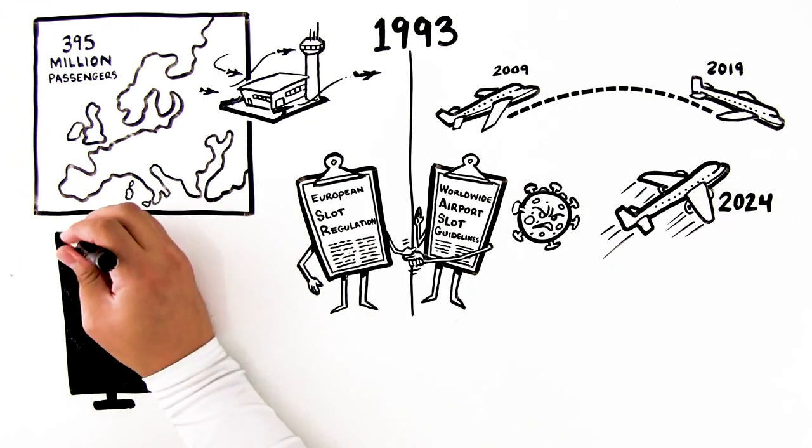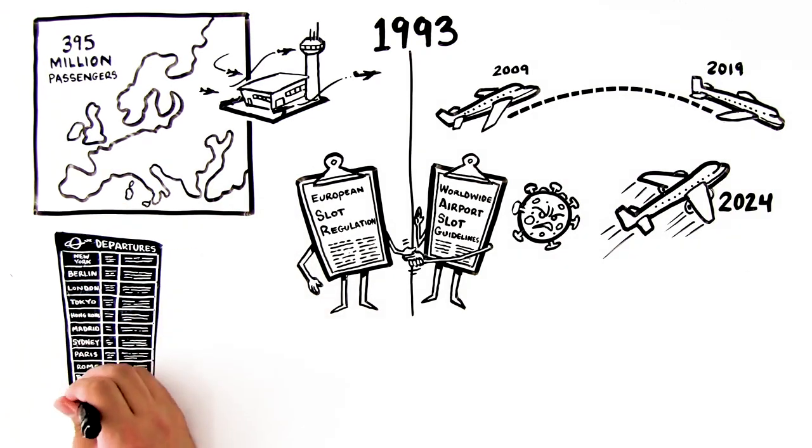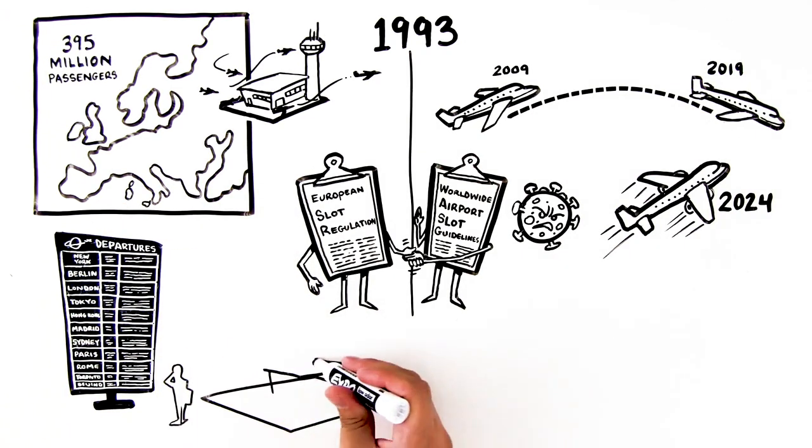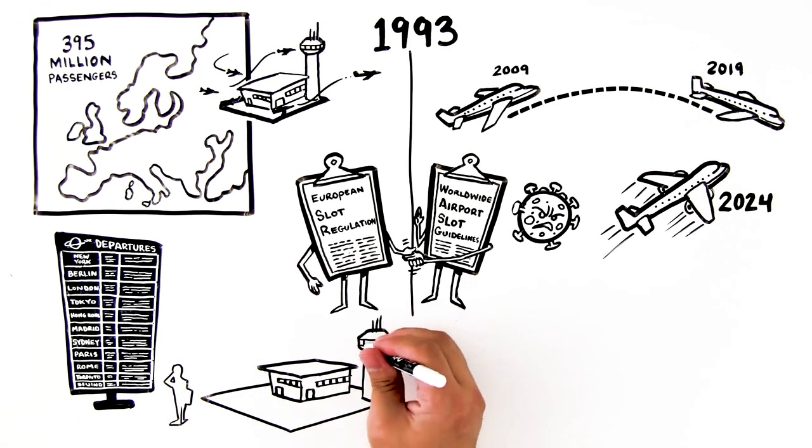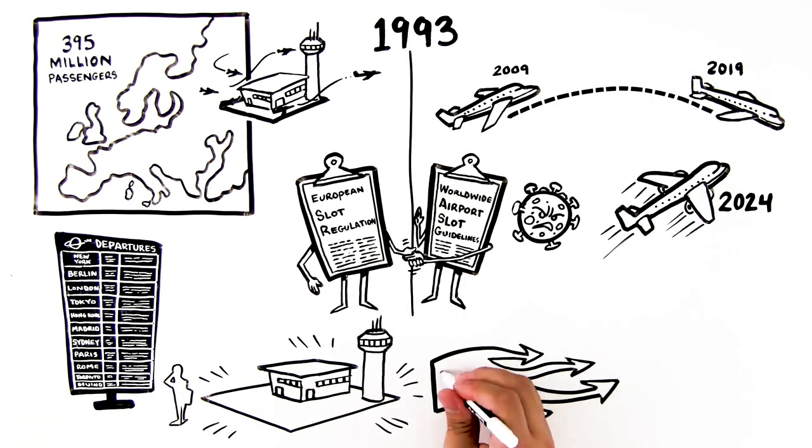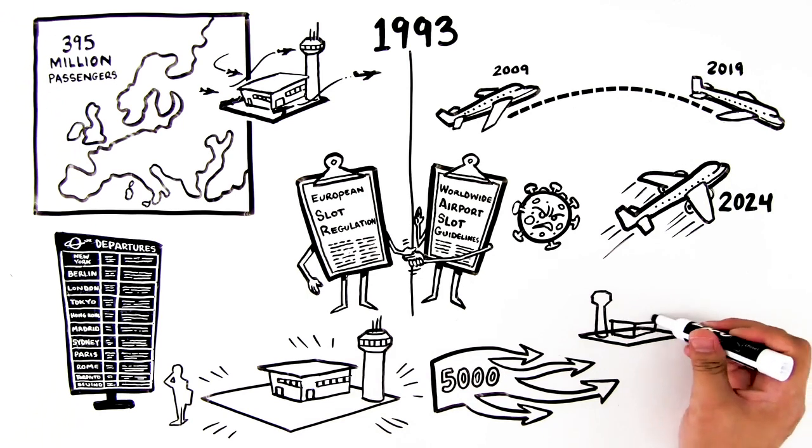And these passengers have enjoyed ever-greater choice of destinations. Over 5,000 routes were added at European airports in the decade from 2009. Over half of these came at the most congested Level 3 airports.